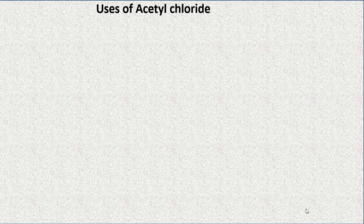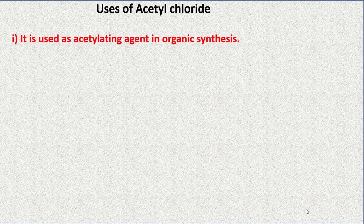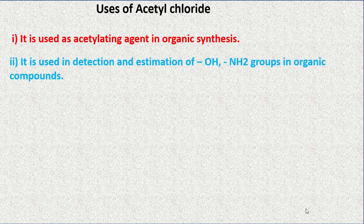Uses of acetyl chloride: it is used as an acetylating agent in organic synthesis. It is also used in the detection and estimation of hydroxyl groups and amine groups.